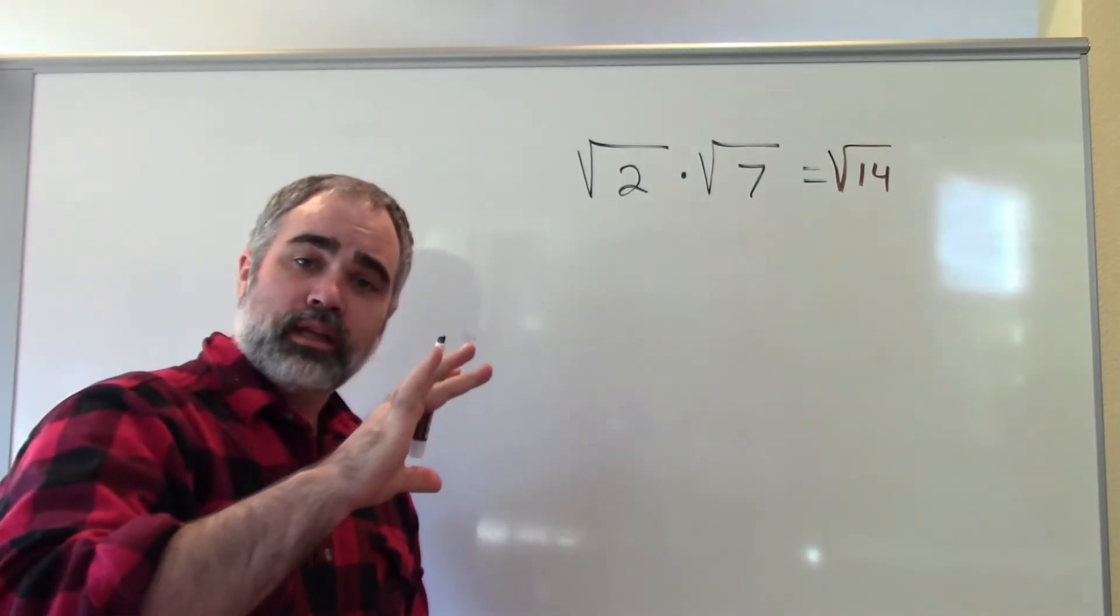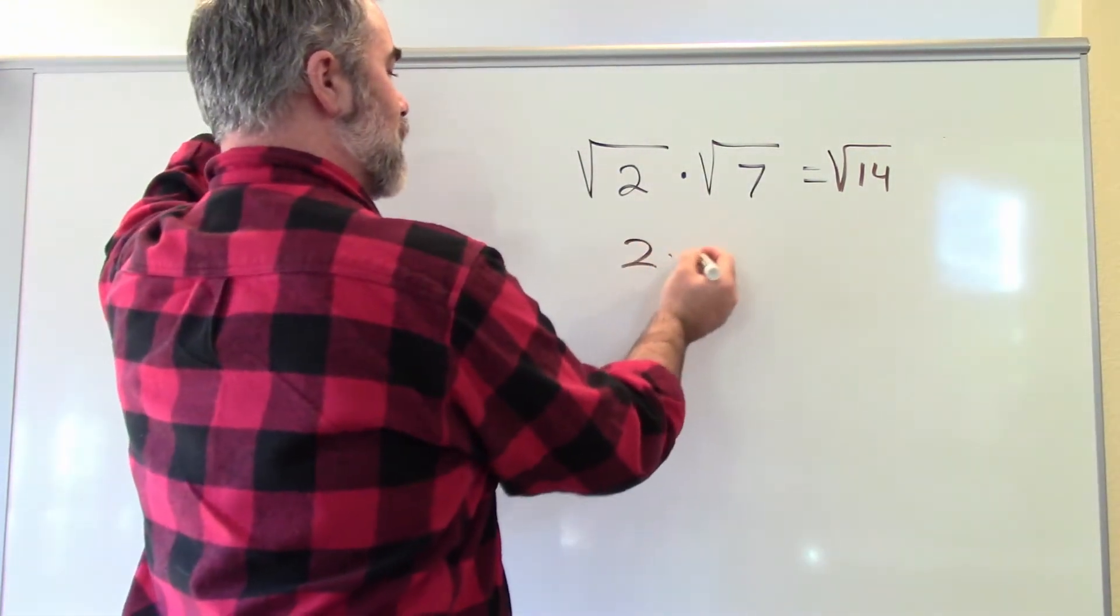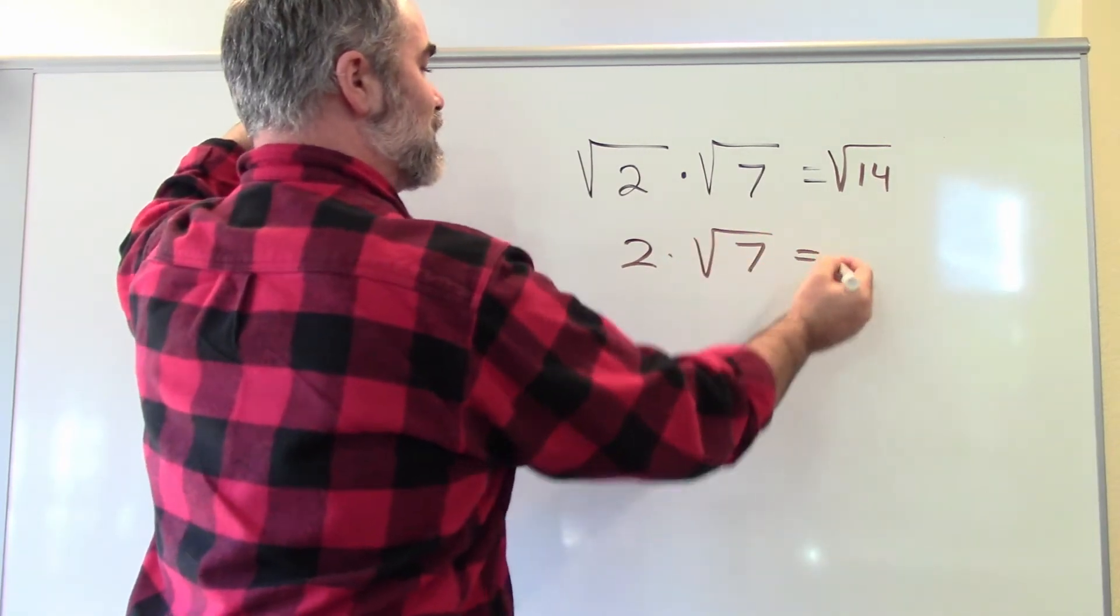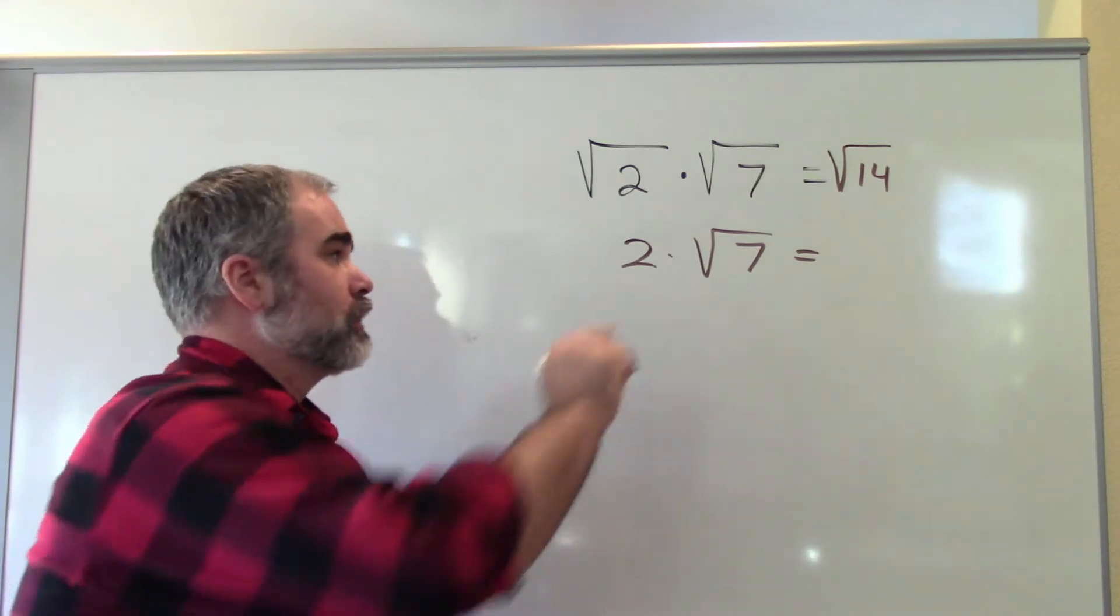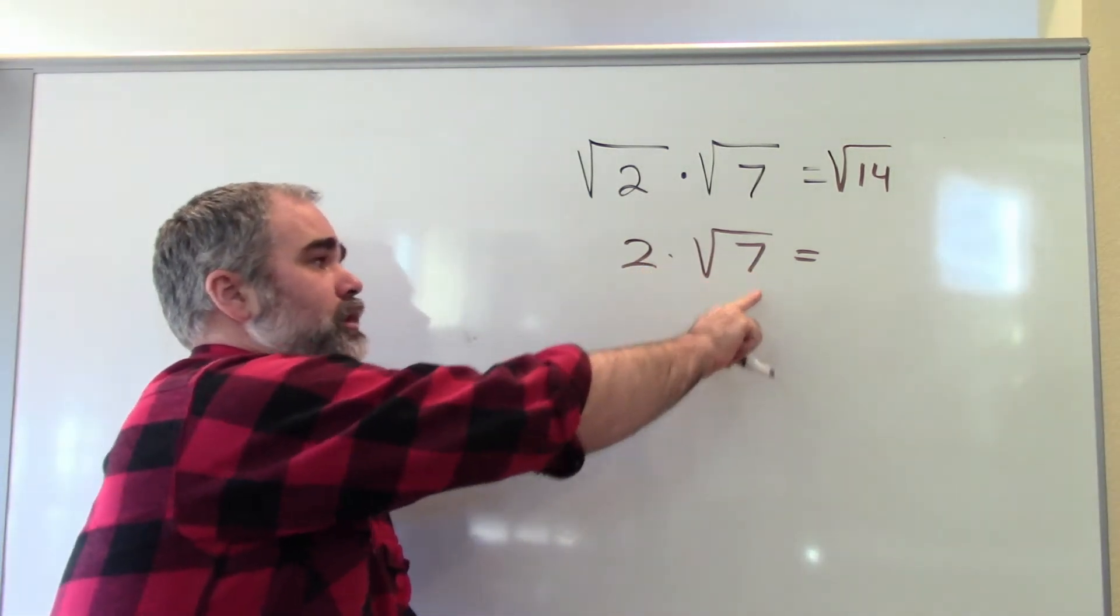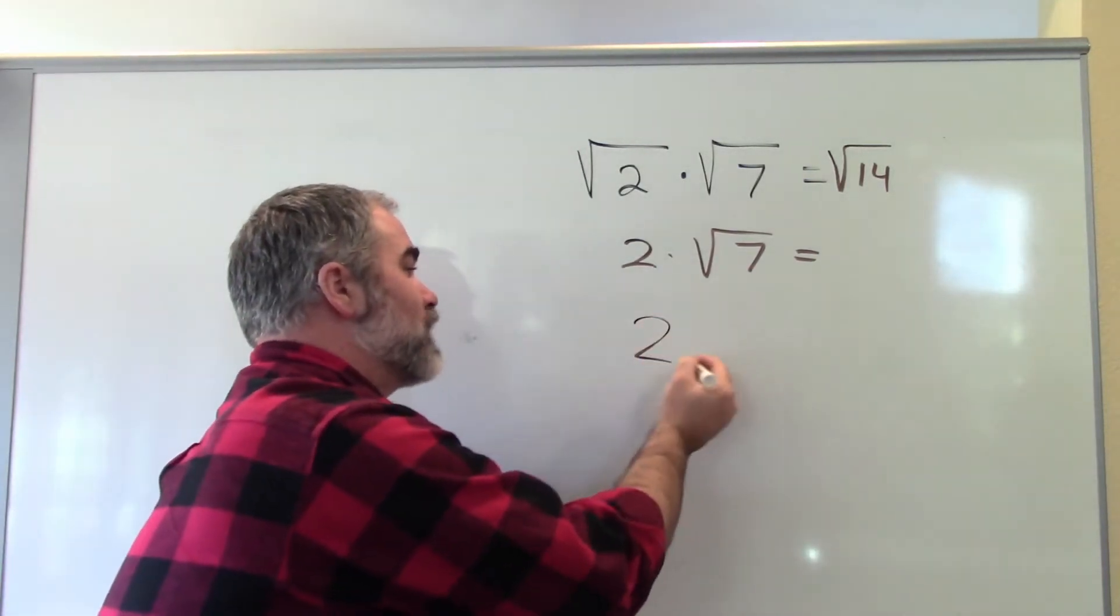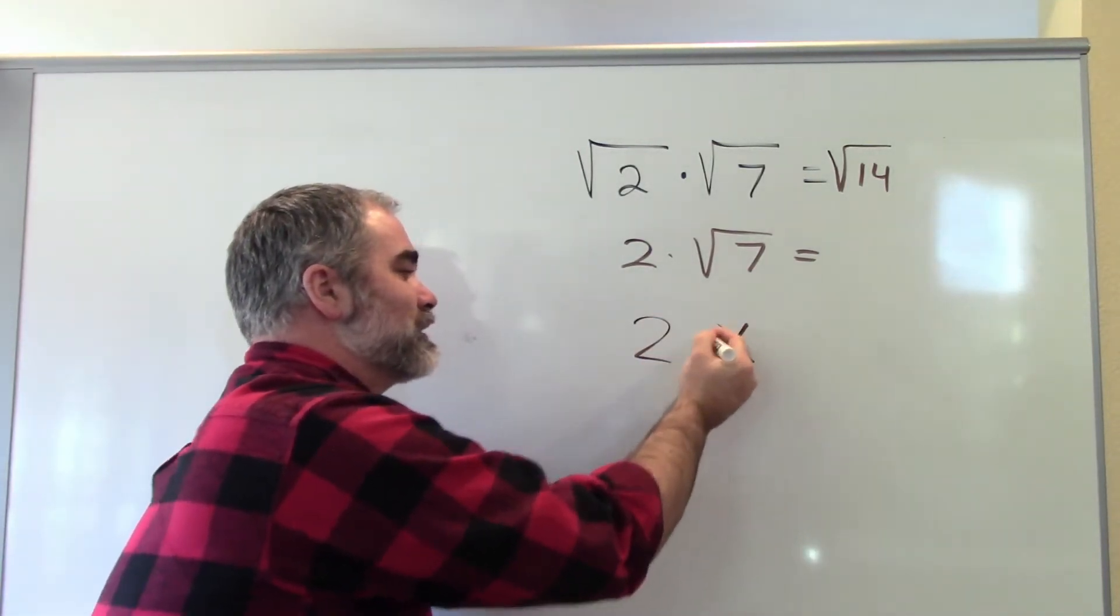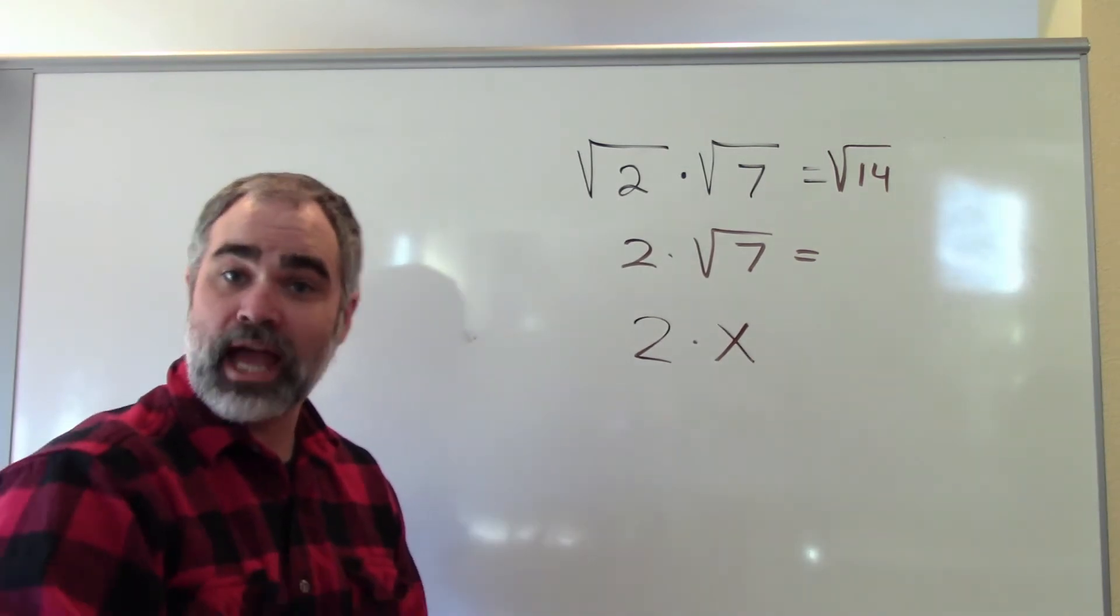Now this is different if you had something like this. 2 times the square root of 7 is not equal to the square root of 14. Notice here, 2 is not in a square root, and square root of 7 is. In the same way that I can't combine something like 2 and x. That doesn't become like 14 or something. It becomes 2x.